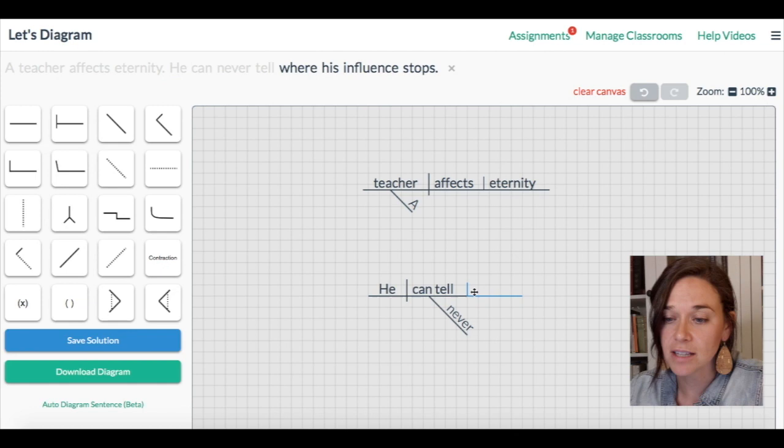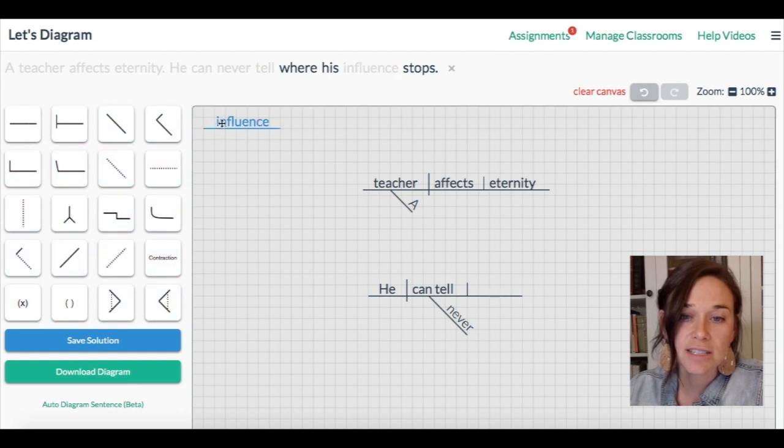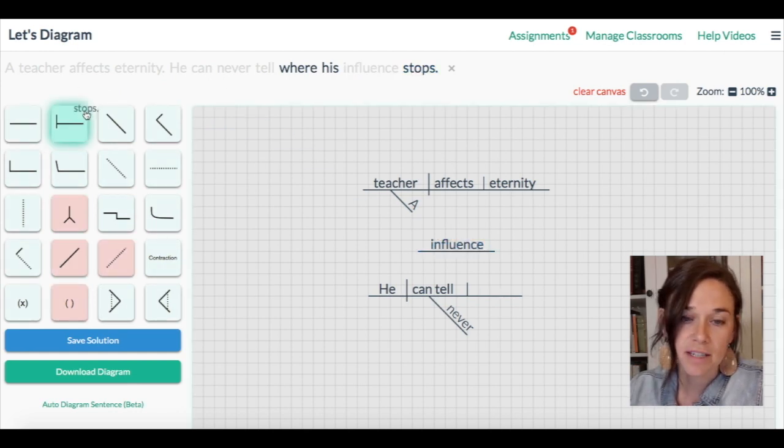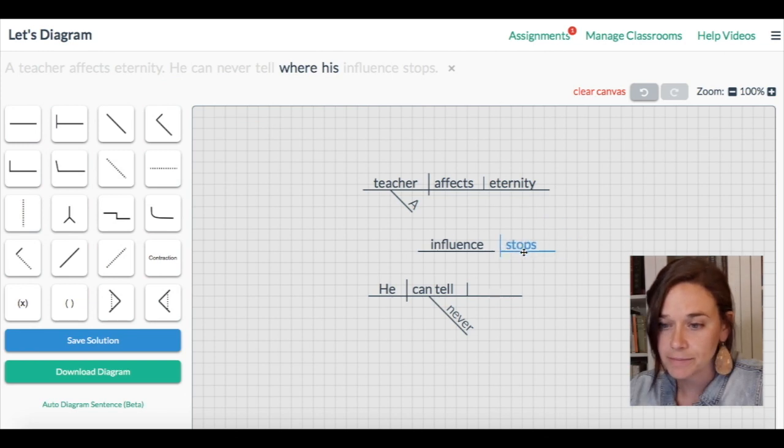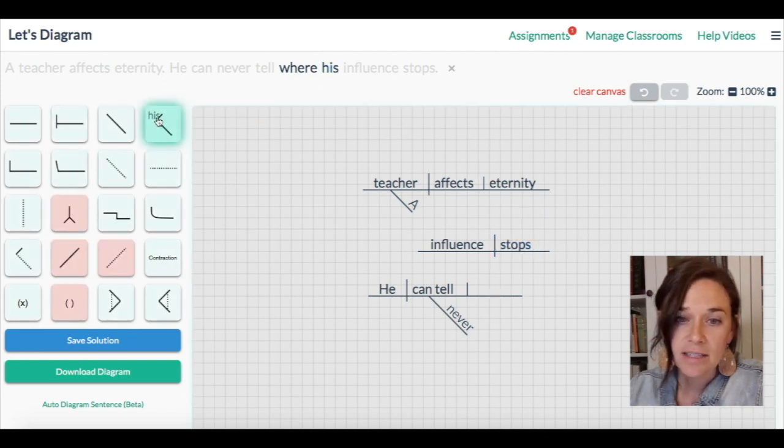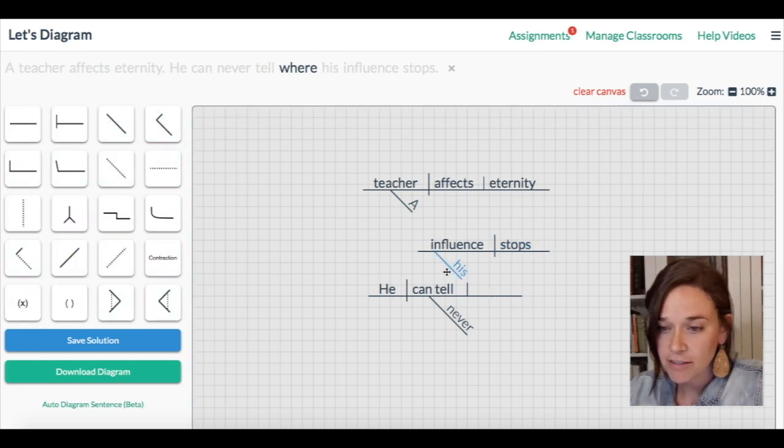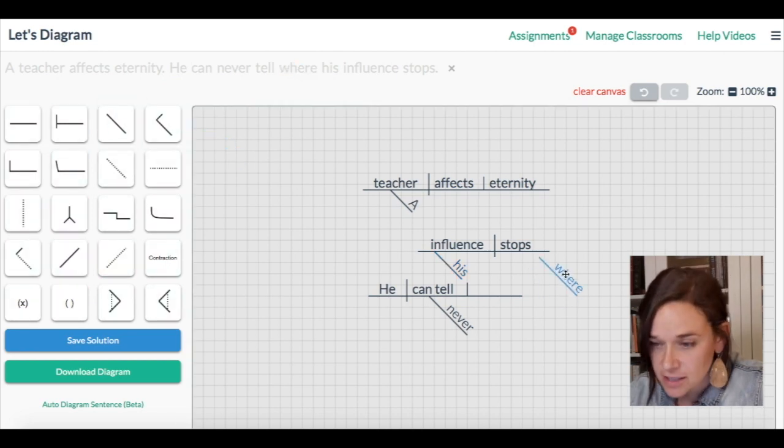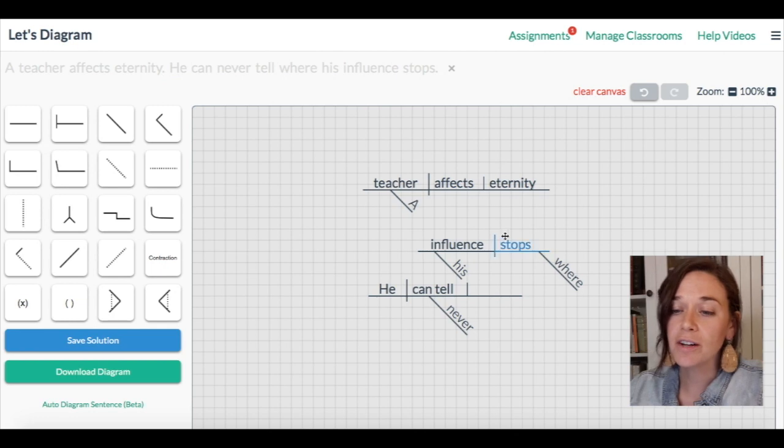First I'll make the little slot. Notice that the structure of the diagram is the same. We're going to put all of these words and connect them to the diagram in this slot. This is a clause. Influence is our subject. Stops is a verb. His is an adjective modifying influence. And where is an adverb modifying stops.